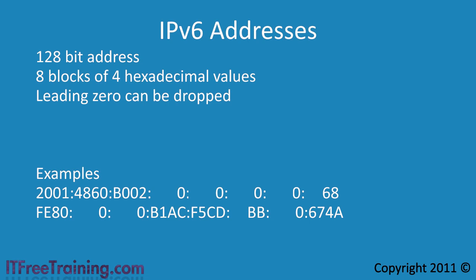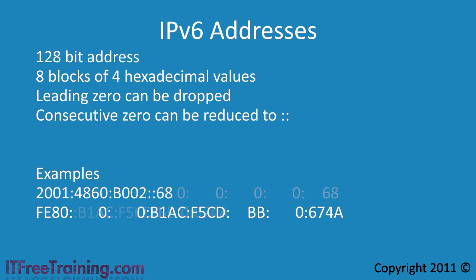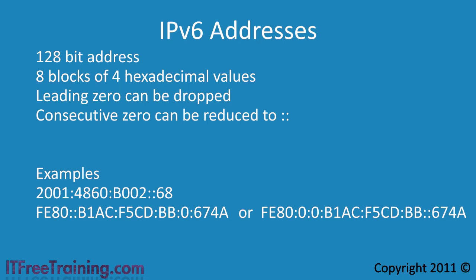If you have consecutive blocks of zeros, these can be reduced. The first set of zeros can be reduced to a double colon. Also, the last set of zeros in an IP version 6 address can be reduced to a double colon as well. Both of these addresses are valid. However, reducing an address down to a double colon can only be done once per address. Thus, the following address with two double colons is not valid.